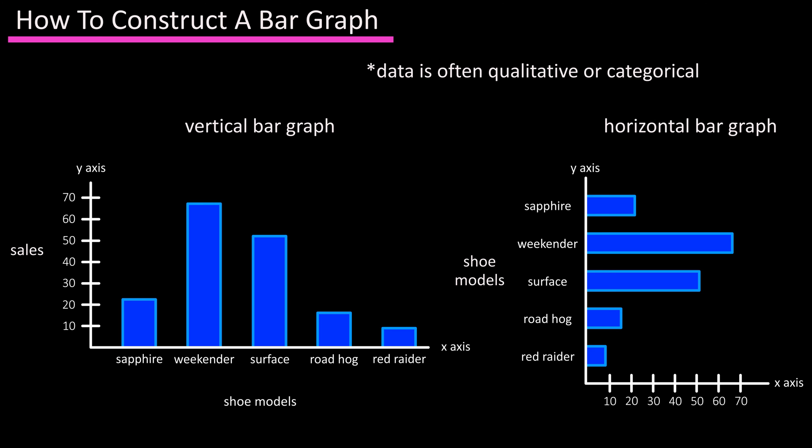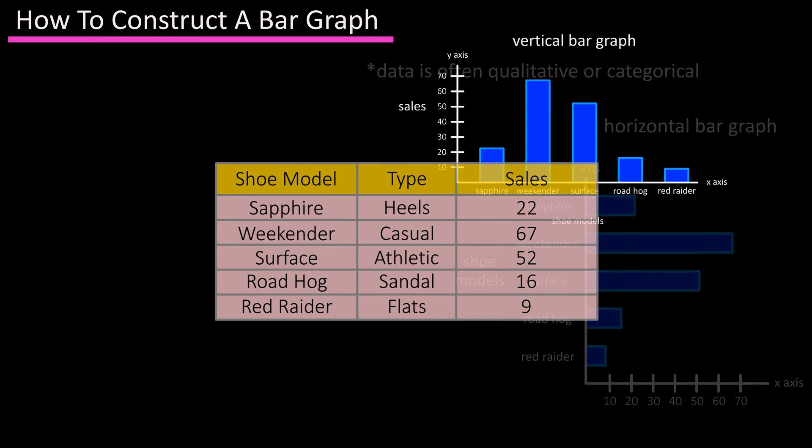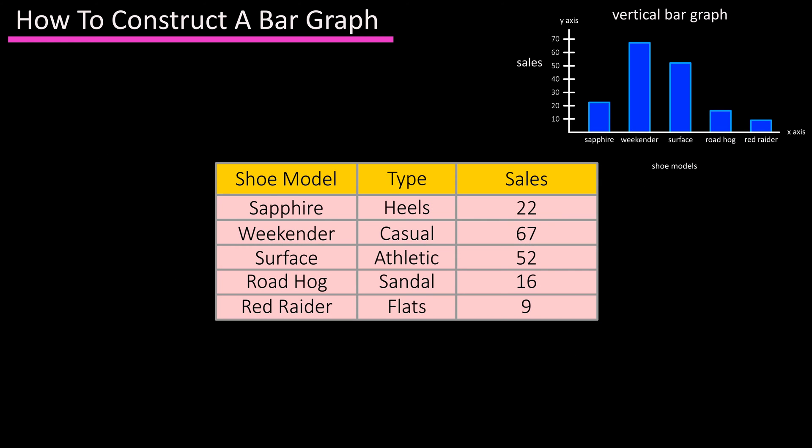For instance, you could construct a bar graph for the data in this table — the number of monthly shoe sales for each model of a certain shoe company.